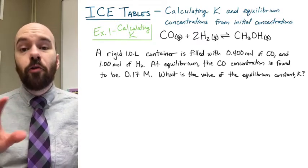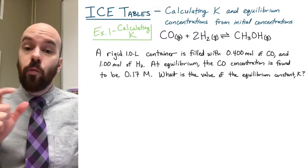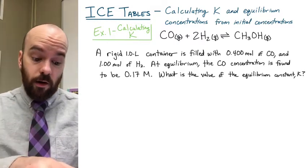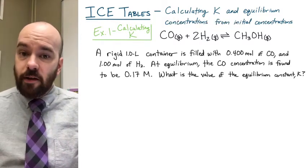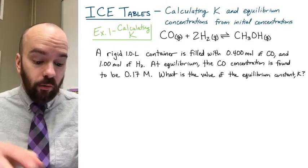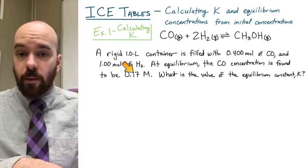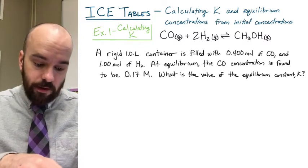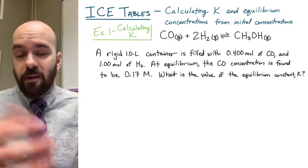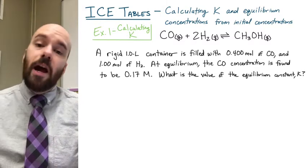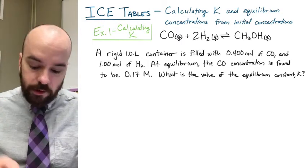We're trying to solve for K. Normally if we knew all of the equilibrium concentrations, we could just write our K expression from our reaction and substitute those values in and solve for K. But we only know one equilibrium concentration — that's carbon monoxide. We don't know the equilibrium concentrations of hydrogen or methanol, so we can't just jump to that step. We have to use an ICE table in order to get there.